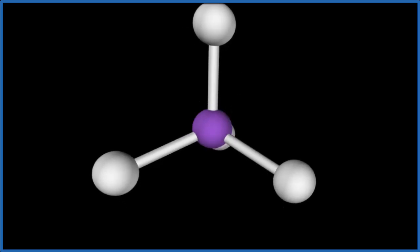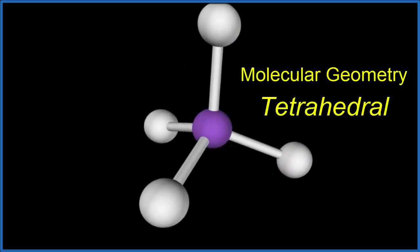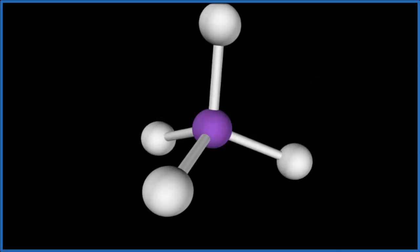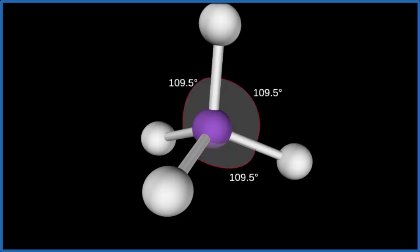When we do that, we end up with what's called a tetrahedral molecular geometry. Each hydrogen atom is as far away as it can be from the others. The bond angles should be 109.5 degrees.